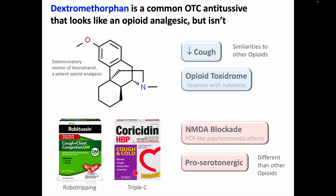Coricidin cough and cold, nicknamed triple C, is a multi-symptom cold medicine intended for patients with hypertension since it doesn't contain any sympathomimetics, but each pill contains 30 mg dextromethorphan hydrobromide in a much smaller, more easily ingestible volume than a liquid cough medicine.